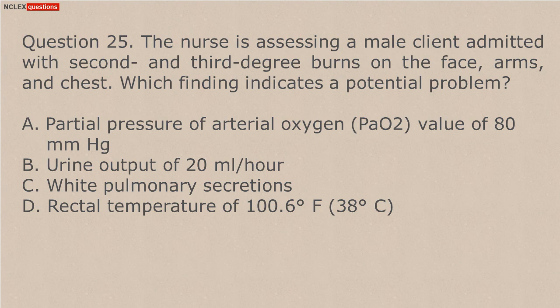Question 25. The nurse is assessing a male client admitted with second and third degree burns on the face, arms, and chest. Which finding indicates a potential problem? A. Partial pressure of arterial oxygen (PaO2) value of 80 mmHg. B. Urine output of 20 millilitres per hour. C. White pulmonary secretions. D. Rectal temperature of 100.6 degrees Fahrenheit (38 degrees Celsius).